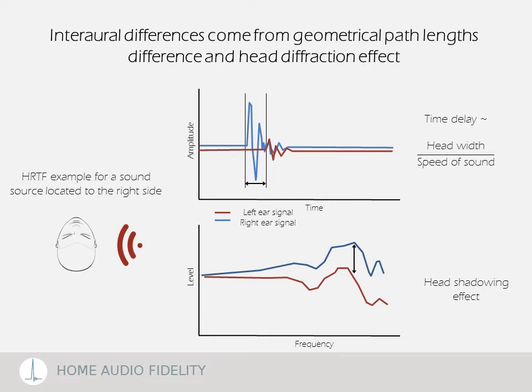The time and frequency differences between each ear change with source direction and personal anatomy. The set of functions describing this dependency is called HRTF — Head-Related Transfer Functions. You can see an example in the time and frequency domain for a sound source located to the right side. It is important to keep in mind that HRTF can change significantly between individuals as head and ear shapes have a major influence.